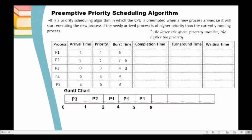P1 is now done. The next in priority is P2. The remaining burst time needed by P2 is 6 units, so we add 6 to 8 — P2 completes at time 14. The next in priority is P3, which has priority 3. It still needs 3 units of time to complete its execution, so we add 3 to 14 — P3 completes at time 17.